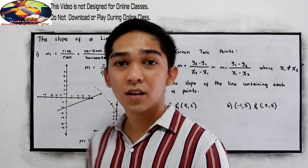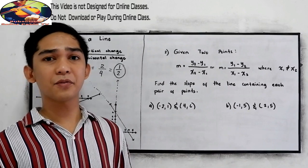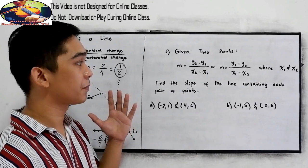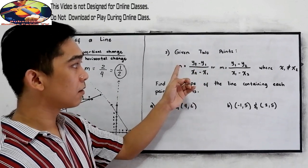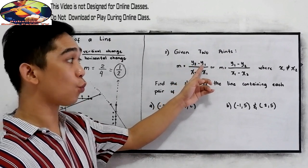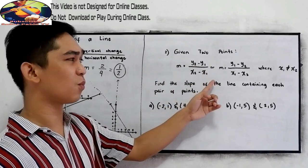Now, we have here given two points. What if the points are given, not in our rectangular coordinate system? So we can use this formula. The slope is equal to y sub 2 minus y sub 1 all over x sub 2 minus x sub 1.